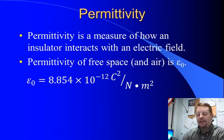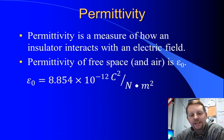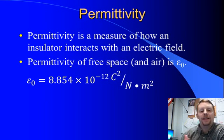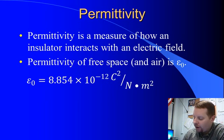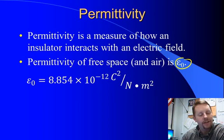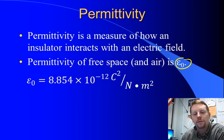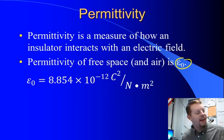Now, permittivity is really a measure of how an insulator acts with an electric field. The permittivity of free space, a vacuum, and of air, we call epsilon zero, or epsilon naught. And its value is a constant that you can find in many different places. We're going to write it as 8.854 times 10 to the minus 12, and its units are coulombs squared per newton meter squared. Let's see how we can use this.